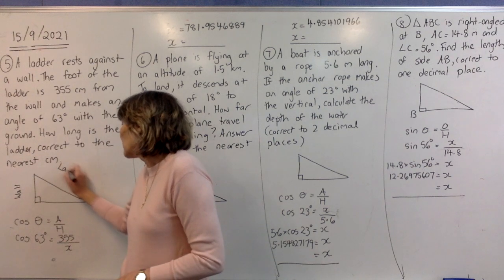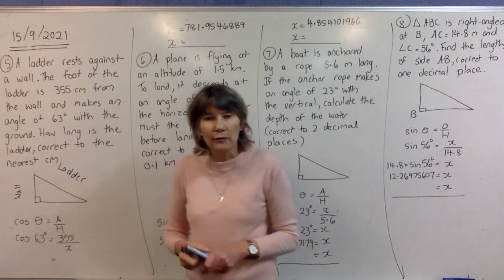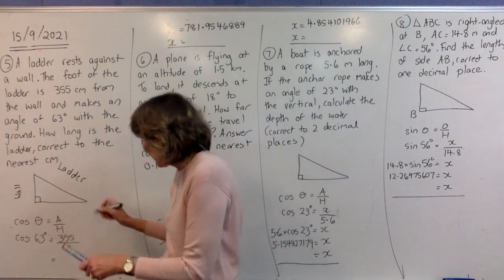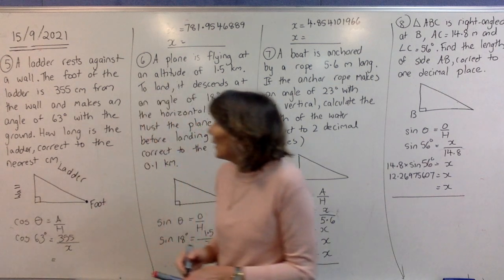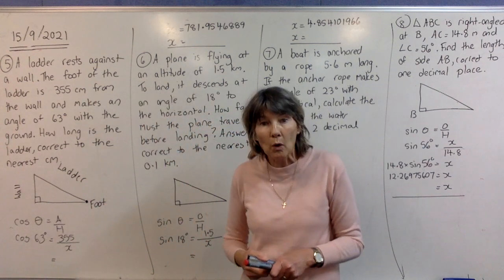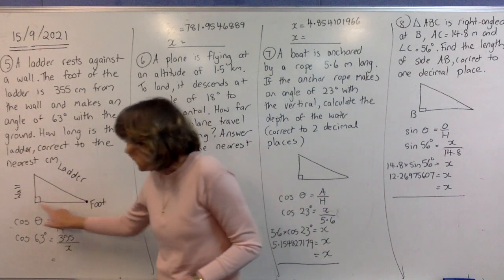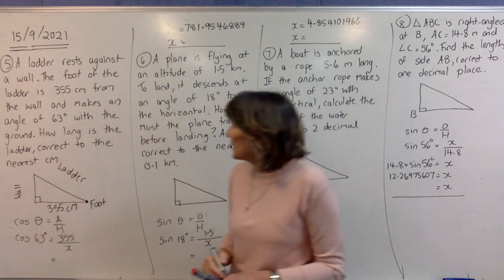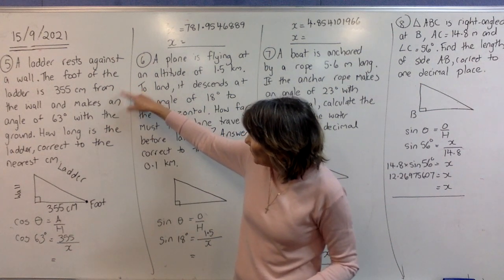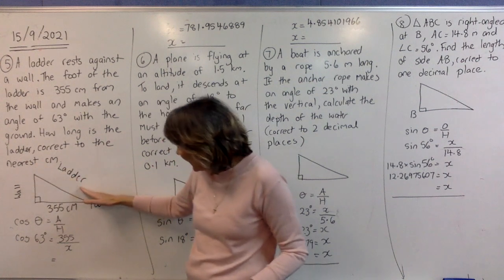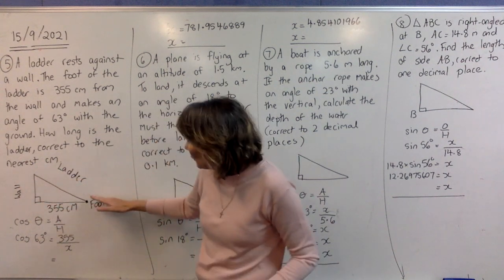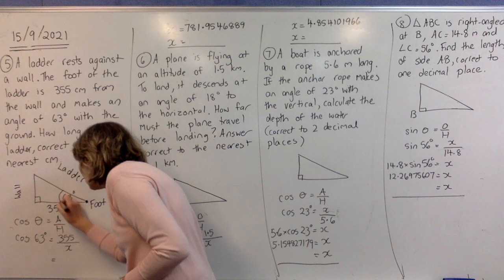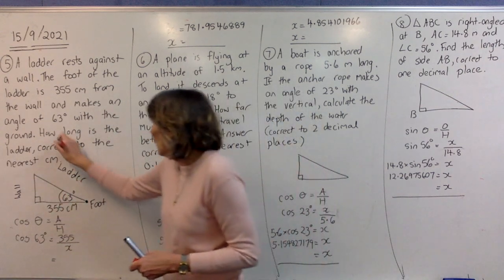The foot of the ladder — the foot means the bottom — is 355 centimeters from the wall. So here's your wall, here's the foot of the ladder, and that's how far it is from the wall: 355 centimeters. The ladder makes an angle of 63 degrees with the ground, so the 63 degrees goes in there. The question is: how long is the ladder?